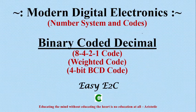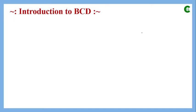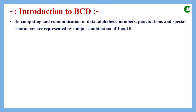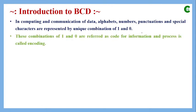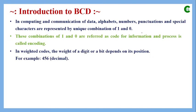In today's class we will learn about Binary Coded Decimal. Digital computers or digital processors don't accept decimal data — they understand only the binary number system, that means only ones and zeros. In computing and communication, alphabets, numbers, punctuations, and special characters are represented by unique combinations of ones and zeros. These unique combinations are referred to as codes, and the process of converting them into binary is called encoding.